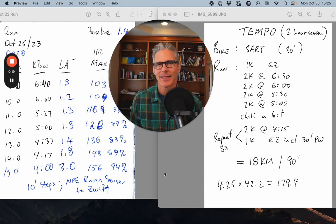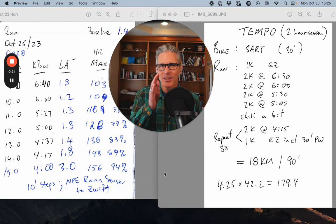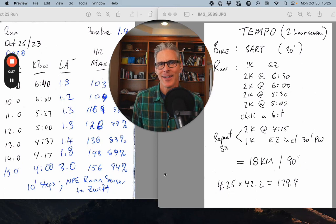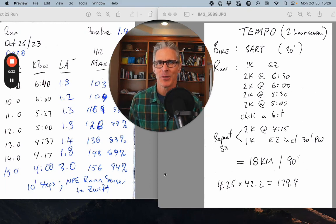Tempo is the dividing point between Zone 3 and Zone 4. It's a moderately hard effort where the work rate is up, but it's not painful. Some people call it sort of happy heart. So you feel like you're working, but you're not panting and the legs aren't burning.